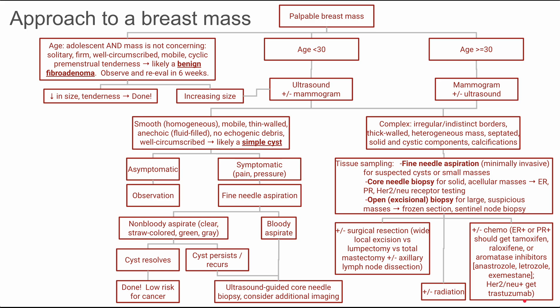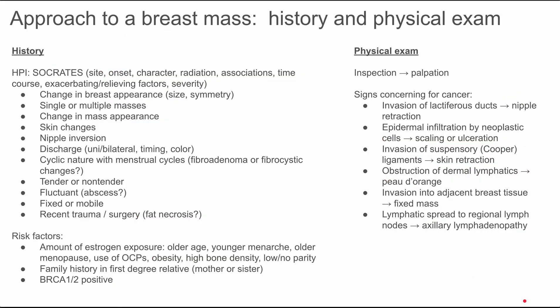So that's our algorithm for approach to a breast mass. Next, here are some history and physical tips. When taking the history, you can start with your standard history of present illness using the acronym SOCRATES: site of the pain or mass, onset — when did it start, character — what does it feel like, is it deep pressure, sharp, or shooting, radiation — does it radiate up your back, into your abdomen, or up to your armpit, associations — is it worse in the morning or with periods, time course — has it been getting better or worse, and exacerbating or relieving factors, and severity out of 10.